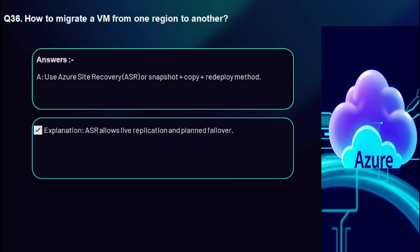Question 37: How do you migrate a VM from one region to another? Use Azure Site Recovery (ASR) or a snapshot-plus-copy-plus-redeploy method. Azure regions are isolated and resources cannot be directly moved to another region — migrating a VM involves recreating its components such as the OS disk, data disks, NIC, and virtual network in the target region. Common methods include Azure Site Recovery (recommended for minimal downtime) and manual migration using disk snapshots or VHD export and import.